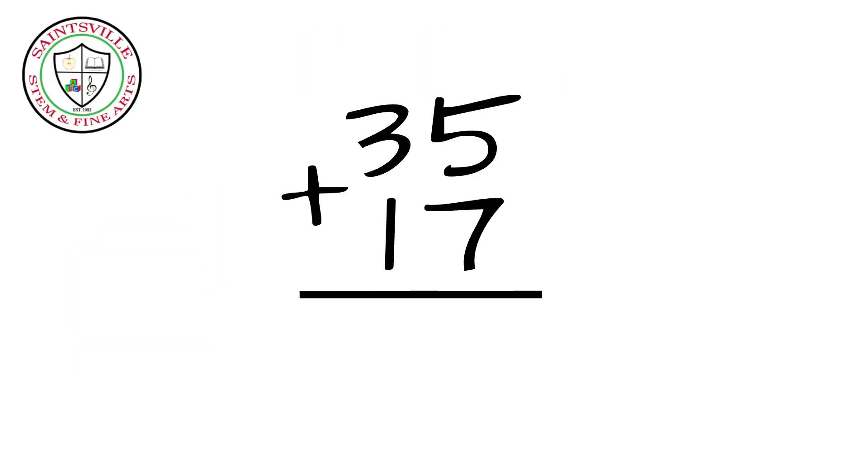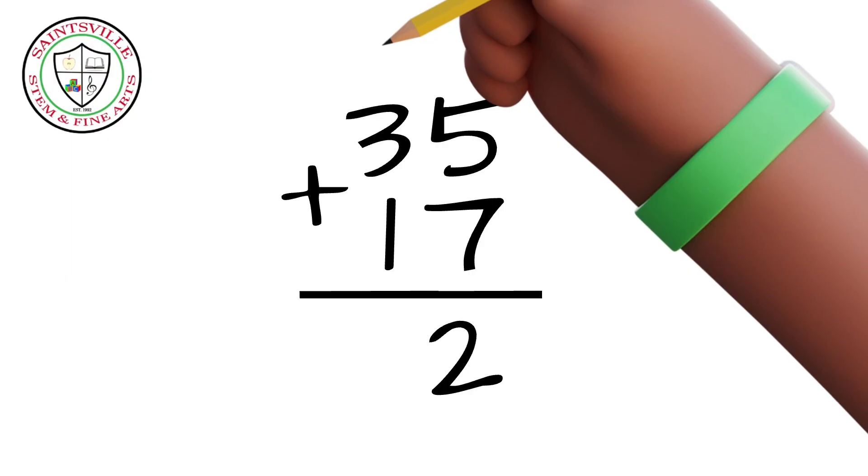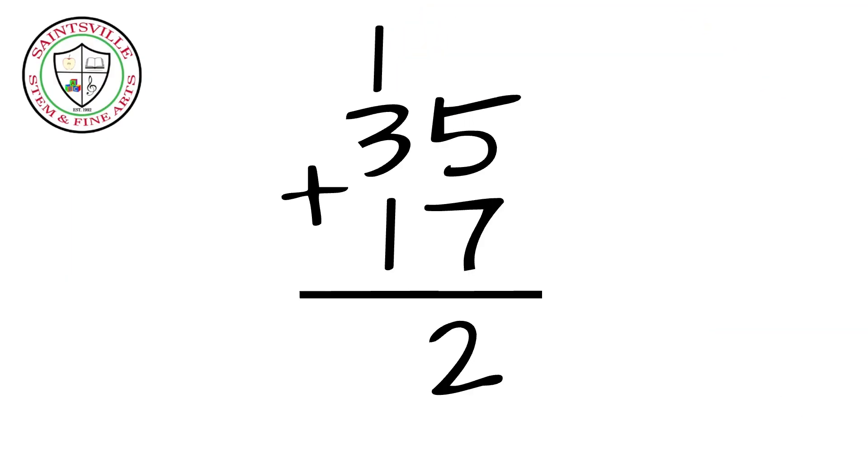Like this. I always start in the ones column and I add 5 plus 7 which is 12. So I write my 2 in the ones place column and carry my 1 to the tens place.